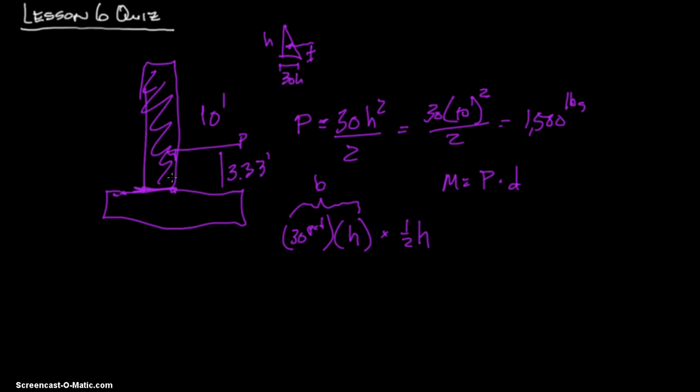So moment equals P times distance. So if you cut it right here, you're going to say your load times distance. And that's moment. That equals 1,500 pounds times 3.33 foot. Or I'll tell you what. Let's just do this. Let's do 10 over 3. And that'll get us an exact answer. And that equals 5,000 foot pounds. And that's going to be your answer.